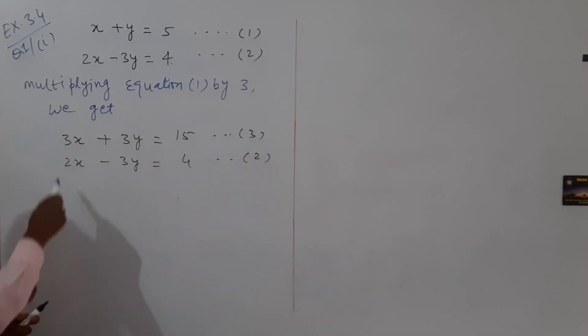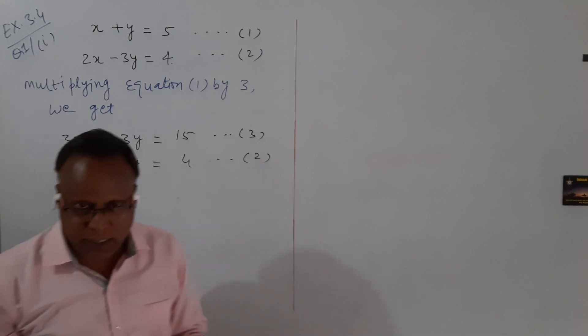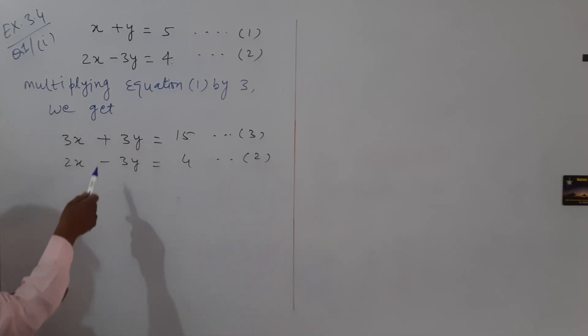Now, if the signs are the same, then subtract. If the signs are opposite, then we add. Because our aim at this time is to eliminate either x or y from these two equations.